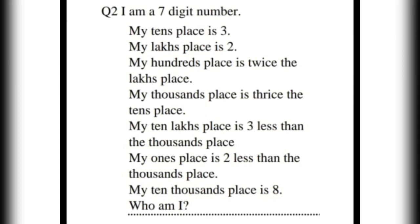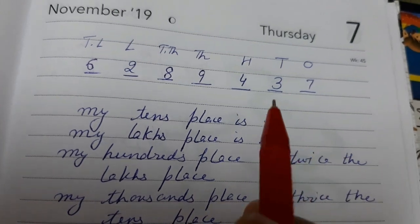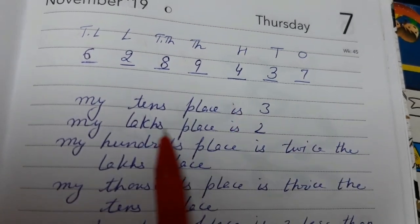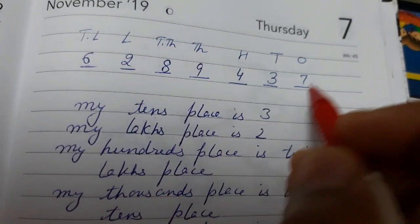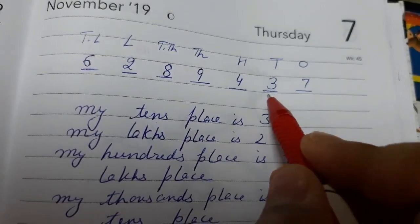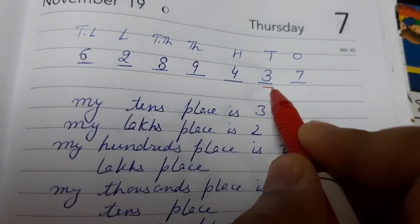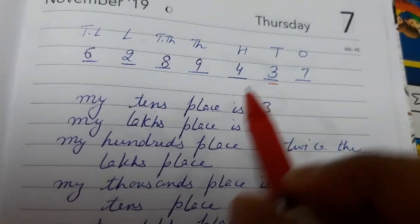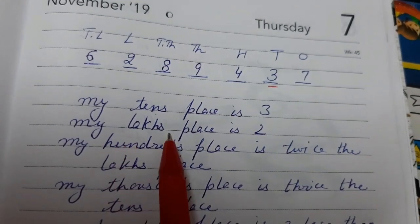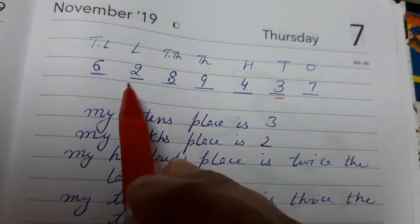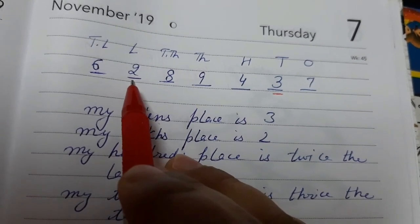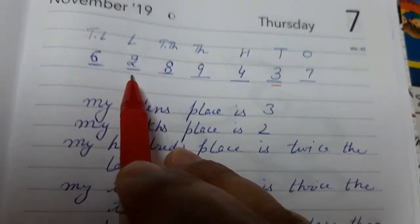Let us solve this question today. In this question, my tens place is 3. First, tens place is 3. Then my lakh place is 2, so my lakh place is 2 here.